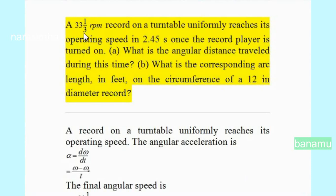A 33 and 1/3 revolution per minute record on a turntable uniformly reaches its operating speed in 2.45 seconds once the record player is turned on. Part A: What is the angular distance travelled during this time? Part B: What is its corresponding arc length in feet on the circumference of a 12-inch diameter record?